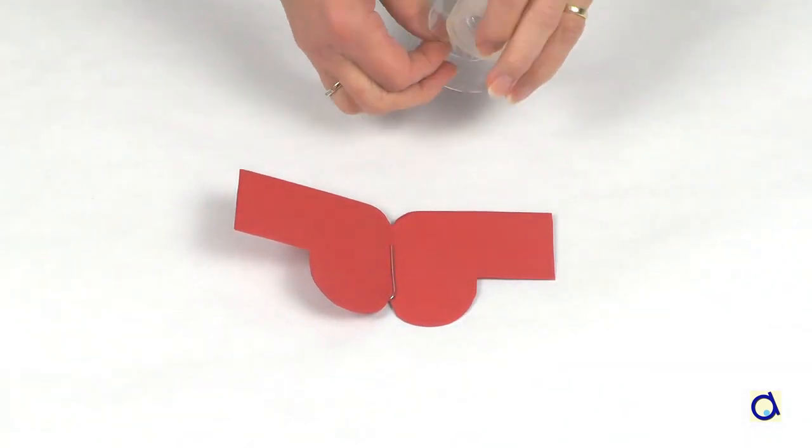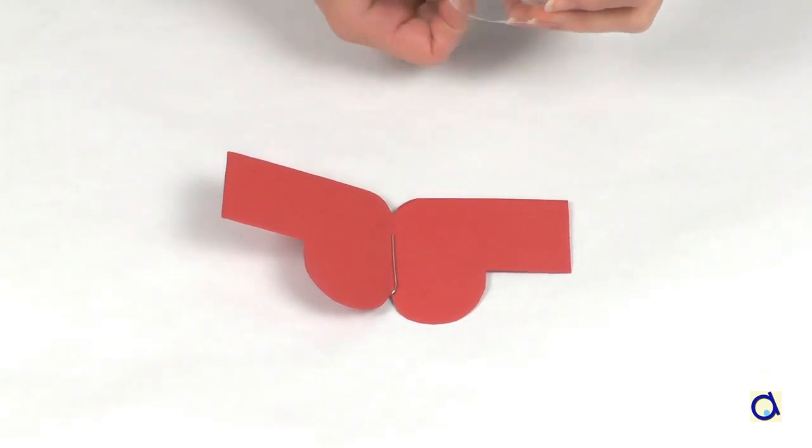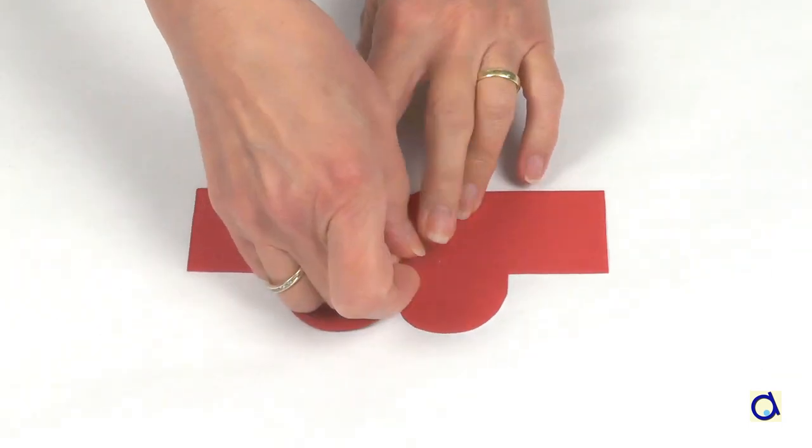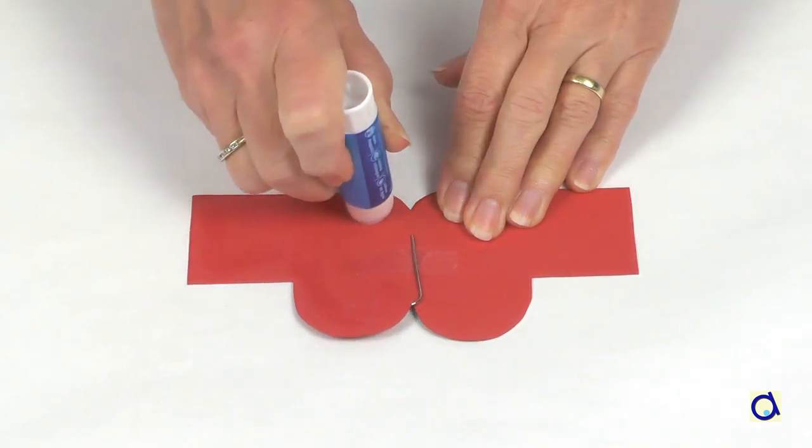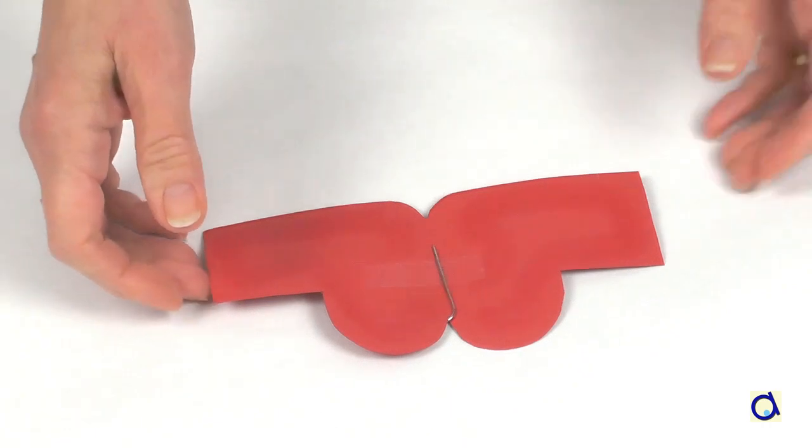And now open the skate and glue the paper clip in place with scotch tape. Put glue from a stick on one of the insides of the skate and then glue both sides on the skate together.